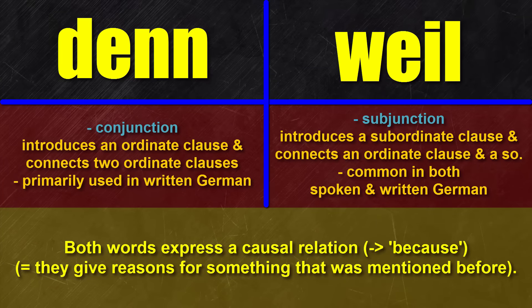Alright, lots of grammar input. Maybe it's a good idea to sum things up. 'Denn' is a conjunction, used in ordinate clauses — die Hauptsätze — and it's mainly used in written German. You can also come across it in spoken German, but that's not the common case. 'Weil' is a subjunction, used in subordinate clauses — die Nebensätze — and it's used in both written and spoken German equally often.